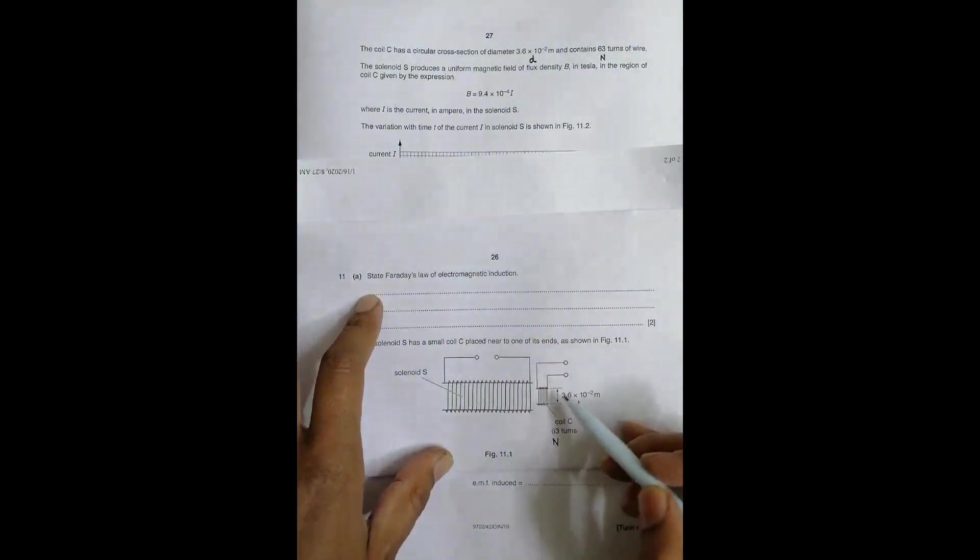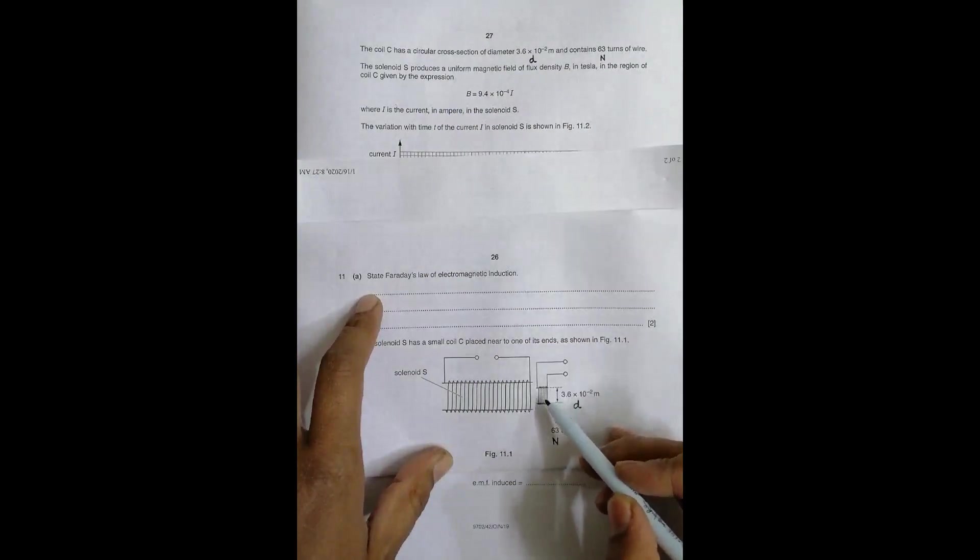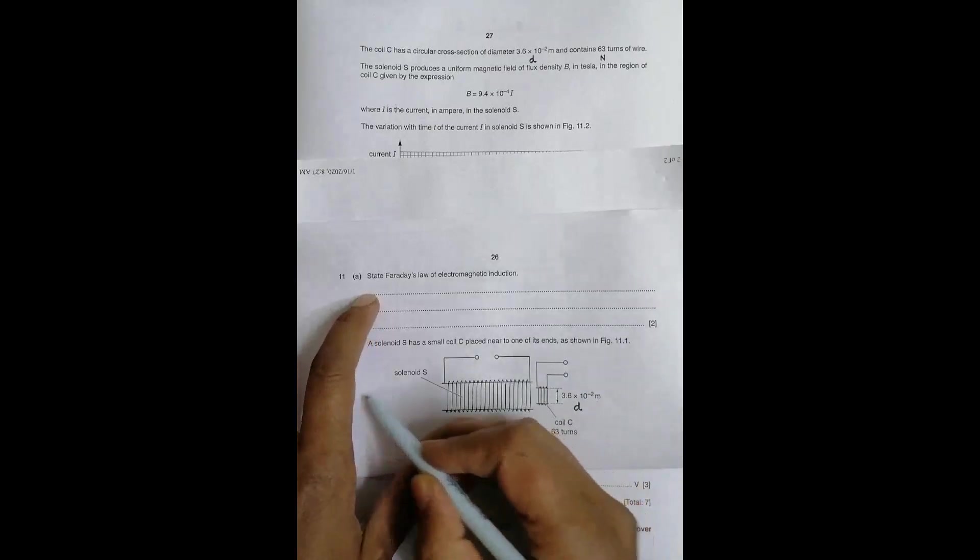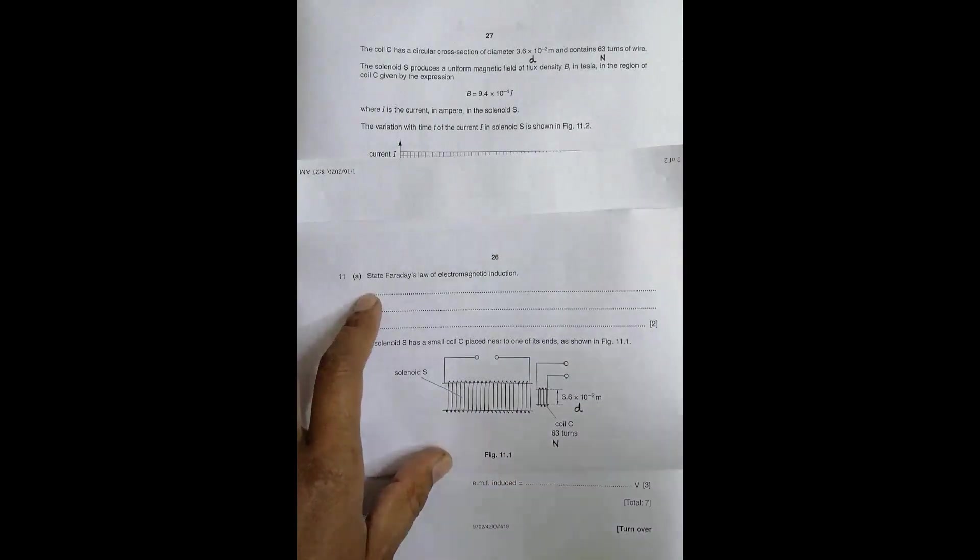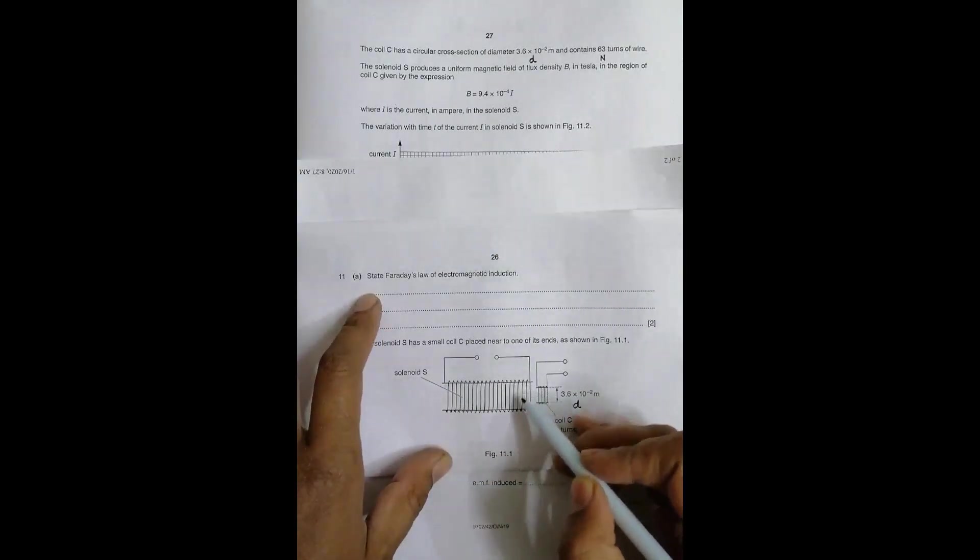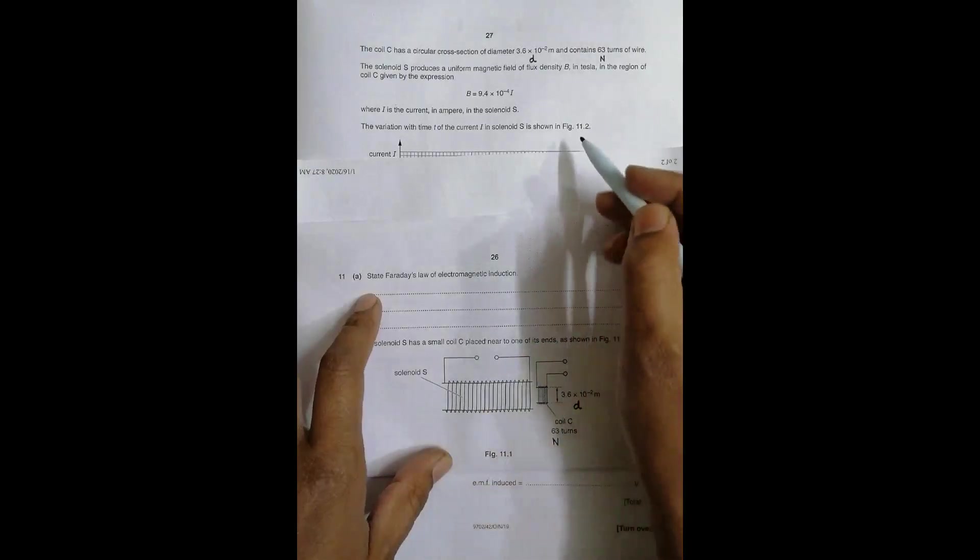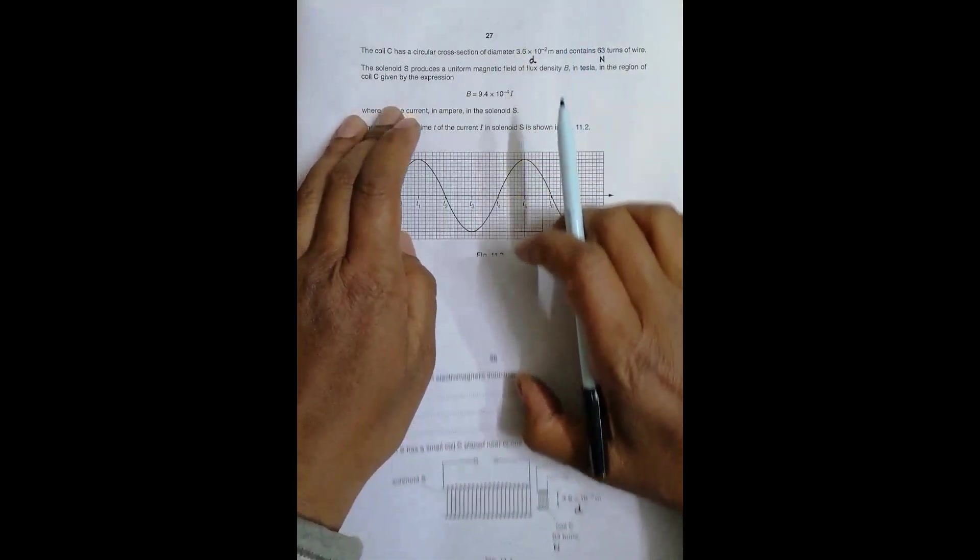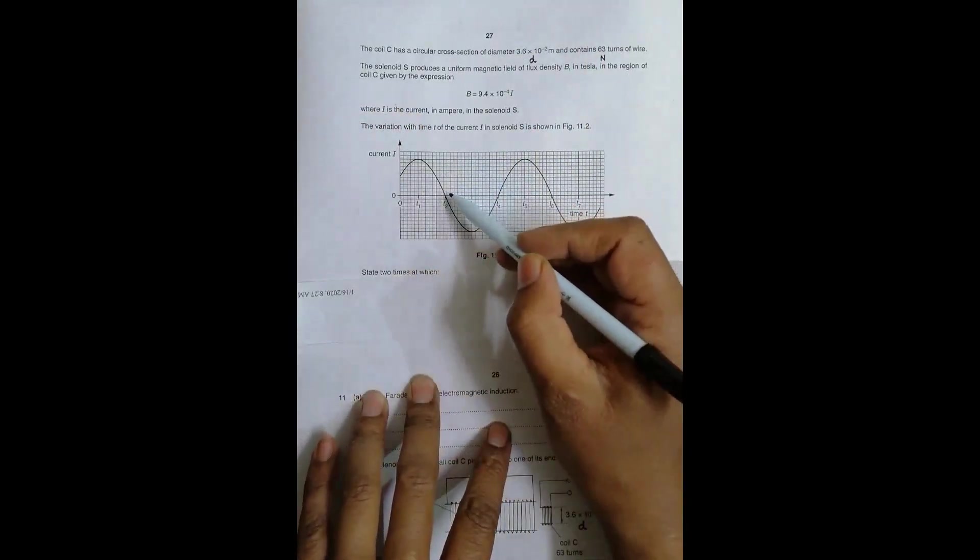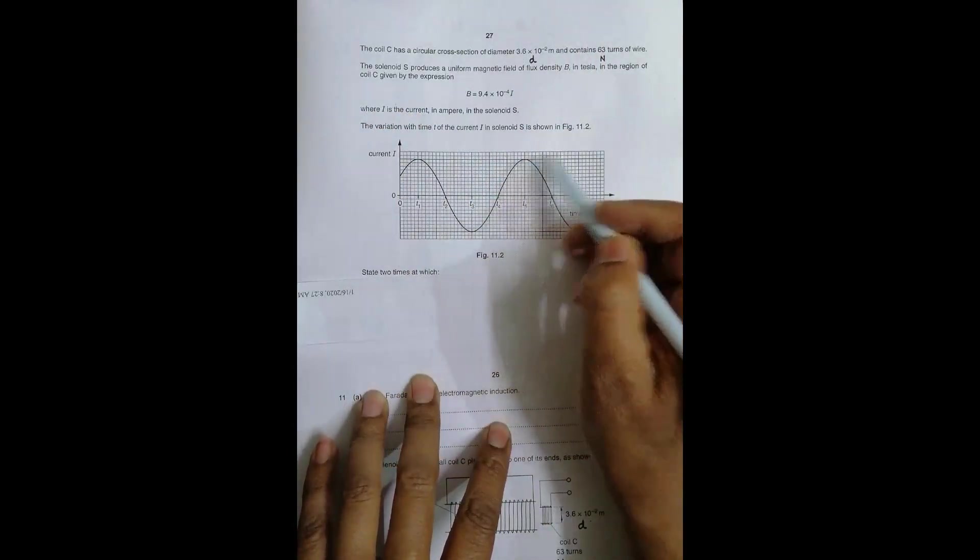The magnetic field in this region is this much, and as we know the strength of magnetic field decreases as distance increases. Inside is very strong, and outside these are the areas with the strongest magnetic fields. The variation with time T of the current I in solenoid S is shown like this.